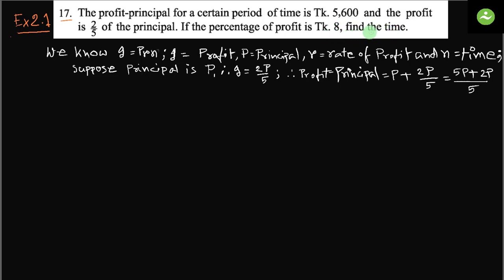All we have to find is the time — the number of years. Now the question is: which method should we use for this math? Here they have already given us the profit plus principal and said the profit is two-fifths of the principal, so from this statement we get the value of both profit and principal.